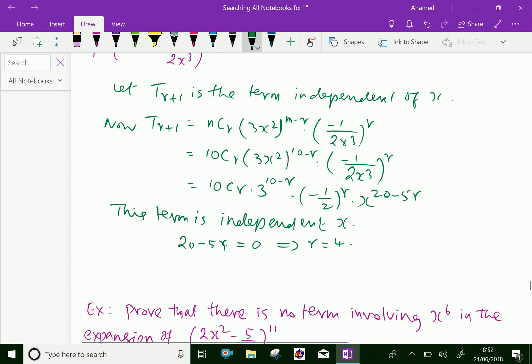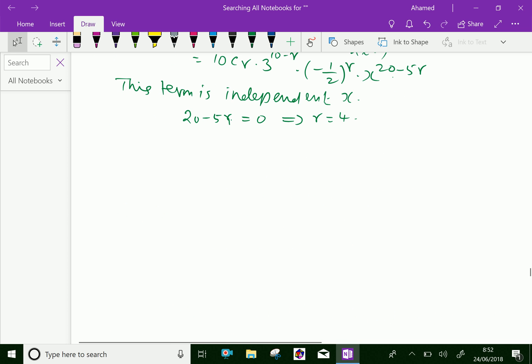Therefore, the required term is T_5 equals 10C4 into 3^(10-4), that is 3^6, into (-1/2)^4, which is positive 1/16.